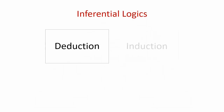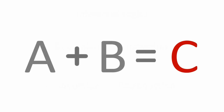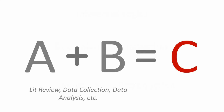Since this is a psychology class and Dave is taking the class, you are making an inference that Dave studies psychology. There are four different types of inferential logics: deduction, induction, abduction, and retroduction. Think of an inferential logic as an equation with three variables — A plus B equals C. A and B being things like your literature review, data collection, and data analysis, and C being your theoretical explanation.